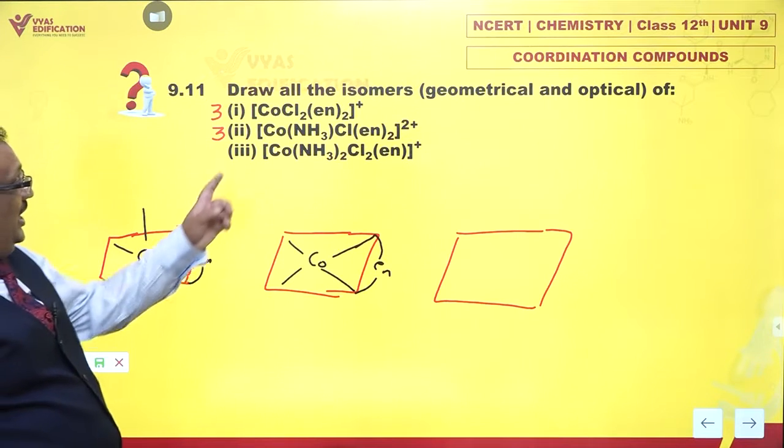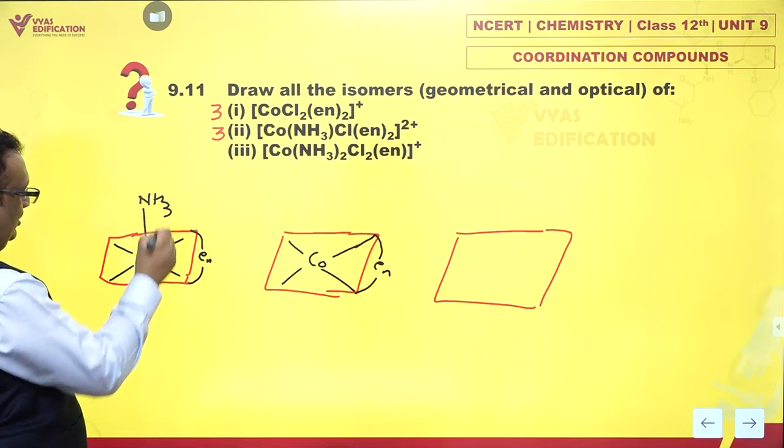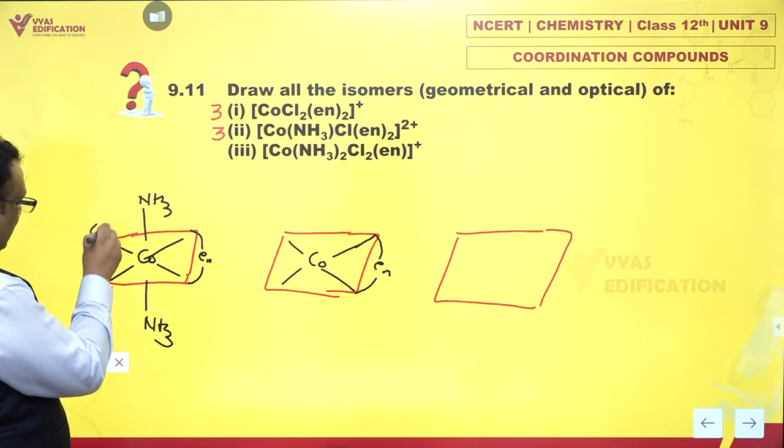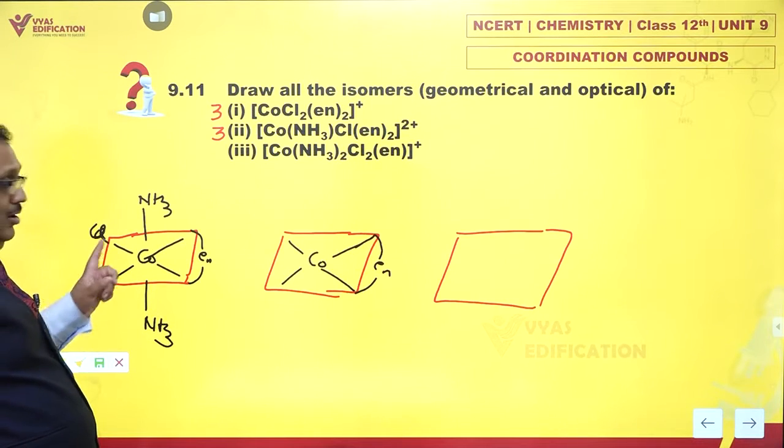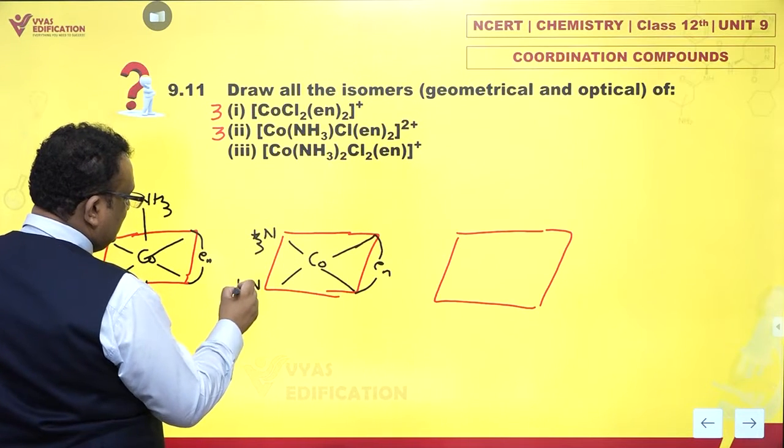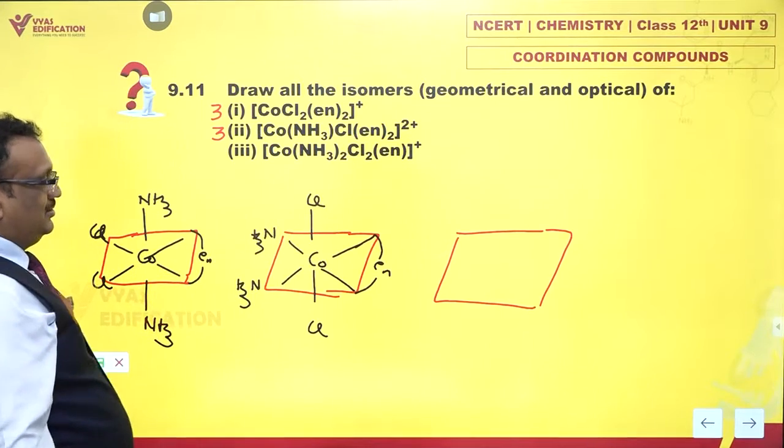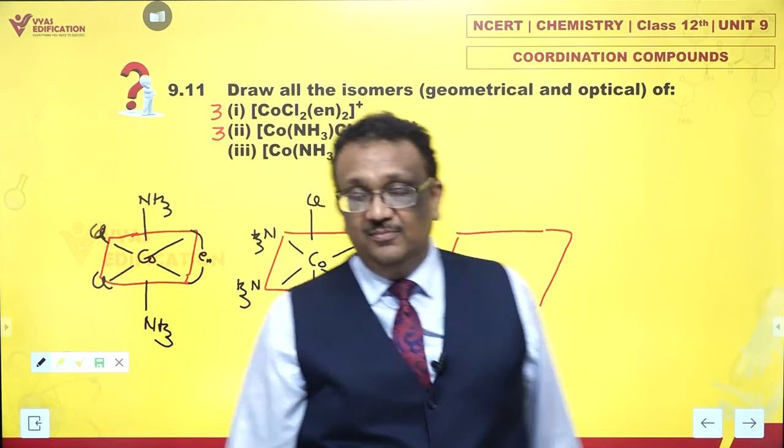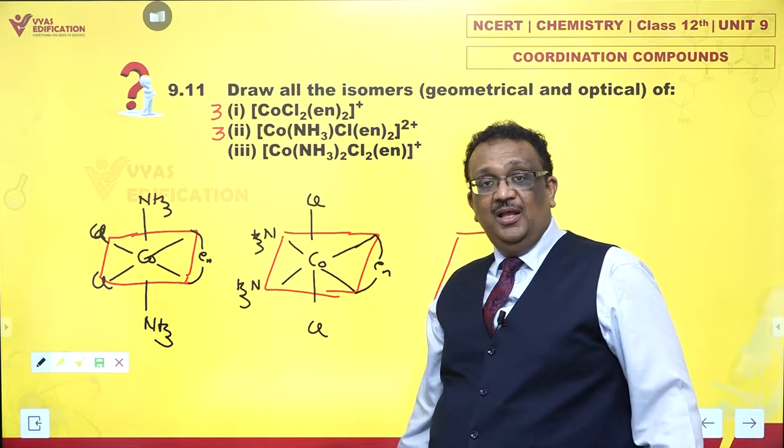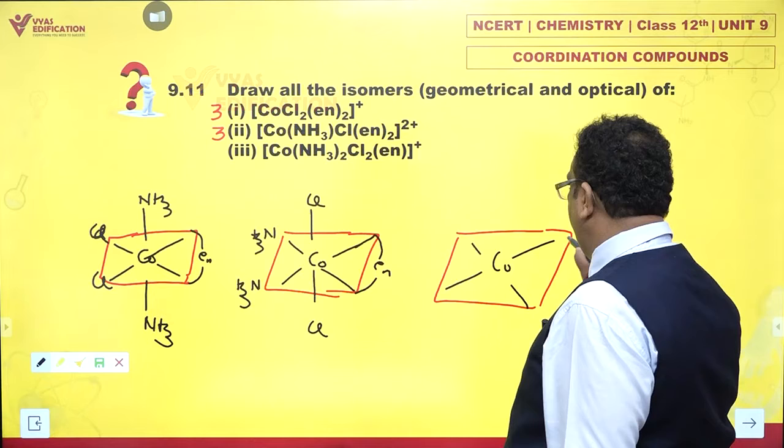I could have in the last one, ammonias which are trans to each other and chloride ion ligands which are cis, or the opposite: ammonia which is cis and Cl which is trans. Please note the nature of locations is such that I just can't have everything trans.